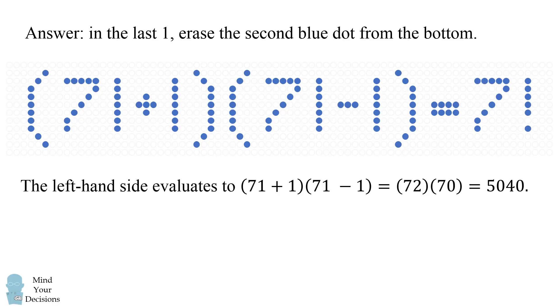The left hand side of this equation evaluates to the quantity 71 plus 1 times the quantity 71 minus 1 which equals 72 times 70 which equals 5040.